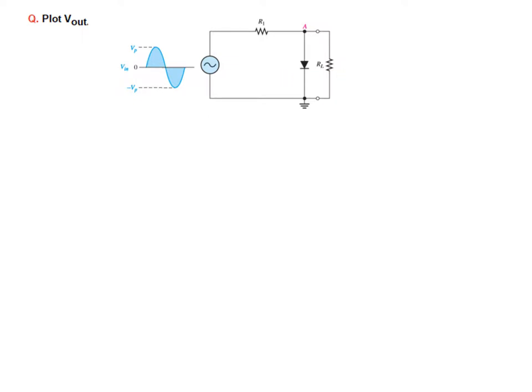This is the circuit. We have to find out the output voltage here, Vout, and plot the output. The input peak is from Vp to minus Vp.